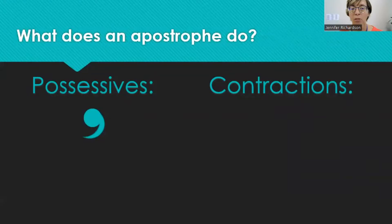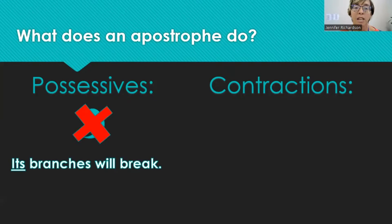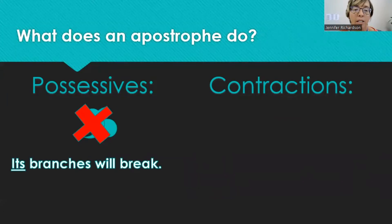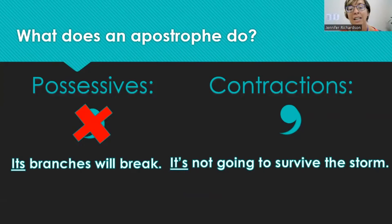So when we talk about the word its, well, its can be possessive and it can also be a contraction. So how do you know the difference? Its branches will break — it owns the branches, that shows possession. What do you notice? There's no apostrophe. This is a possessive pronoun, and these kinds of possessive words don't use apostrophes — none of them do. But the apostrophe belongs with the contraction: it's not going to survive the storm, meaning it is not going to survive the storm. This apostrophe has the important job of taking the place of the missing I in is. When we take out the I and form the contraction, the apostrophe holds the place of a missing letter.